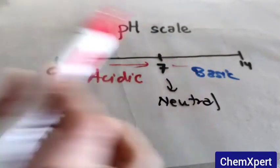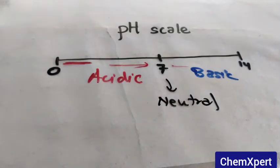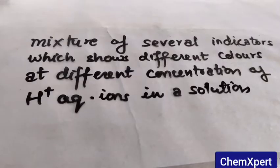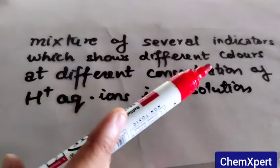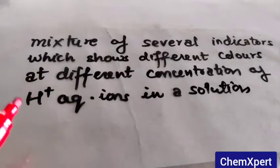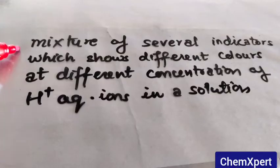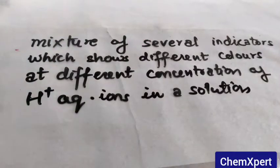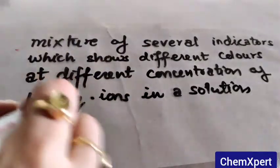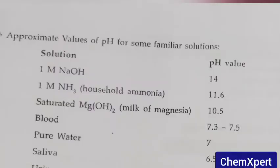The next question is: what is universal indicator? Universal indicator is a mixture of several indicators which shows different colors at different concentrations of H+ aqueous ion in a solution. It is a mixture of several indicators and it shows different colors at different concentrations of H+ ions.